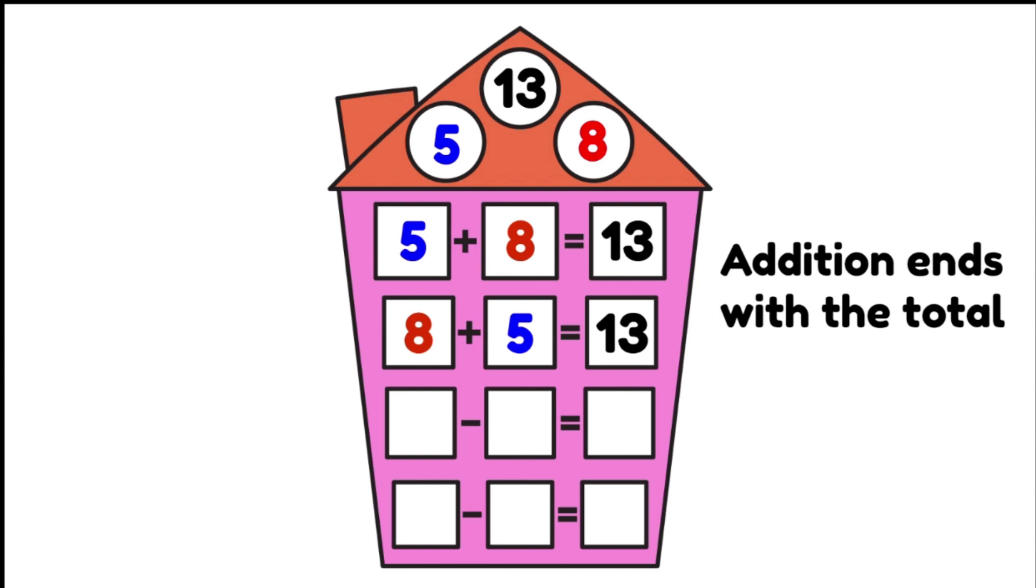We've used the same numbers to create a new number sentence for addition. Now let's try subtraction. We know subtraction always starts with the total. So we pop 13 at the start of the number sentence. We now use the other two numbers in our fact family, 8 and 5. So 13 take away 8 gives us 5.